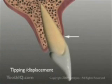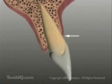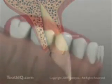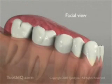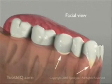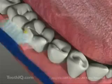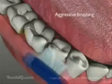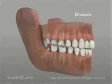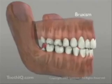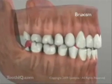Teeth either tipped or displaced entirely toward the lip or tongue, such that the tooth-supporting bone on one side is too thin to provide adequate support for the gingiva. Gingival recession may be aggravated by regular aggressive brushing and clenching and grinding, or bruxism.